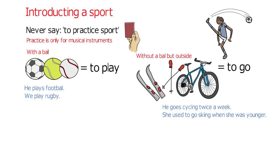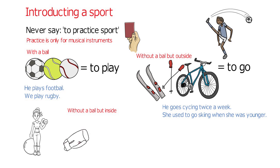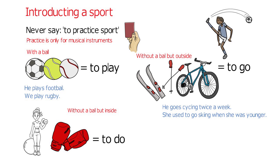Finally, if your sport is without a ball and usually happens inside a gym — such as aerobics, yoga, or boxing — use 'to do'. For example: 'She did yoga last year' or 'He does a bit of boxing at the weekends'.